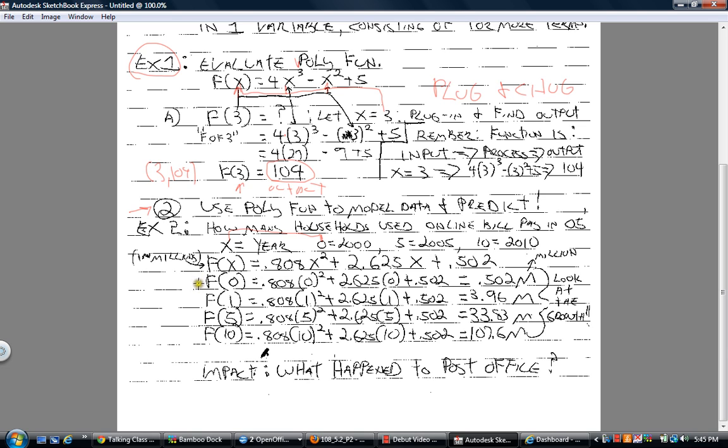If you're going to write a report up for your boss, you want to show them trend analysis. Look what happens five years later, 2005. Put X in for five. Five squared, multiply all these out: 33.83 million. From a half a million to 33 million in five years. That is phenomenal growth. Look what happened in 2010. Ten years, one decade. The number of people using online bill paying was 107.6 million. That's one third of the population of the United States, roughly.